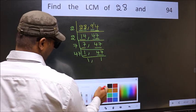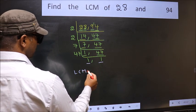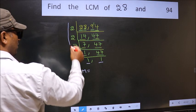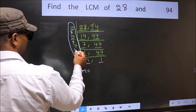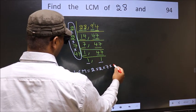So we got 1 in both places. Our LCM is the product of these numbers. That is 2 × 2 × 2 × 7 × 47.